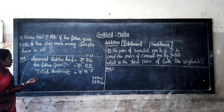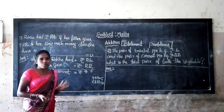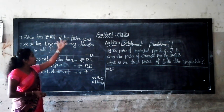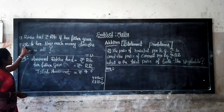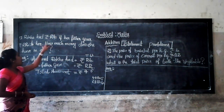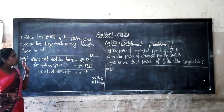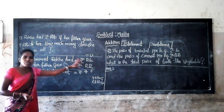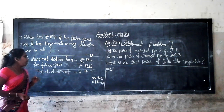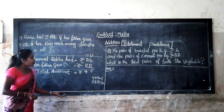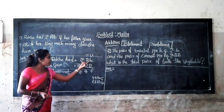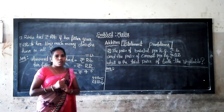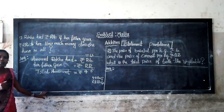The total amount is rupees 46. Once again: Rekha had rupees 24, if her father gives rupees 22 to her, how much money does she have? Rekha had rupees 24, her father gave rupees 22, so 4 plus 2 equals 6 and 2 plus 2 equals 4. Total amount is rupees 46. I hope you understand this statement problem.